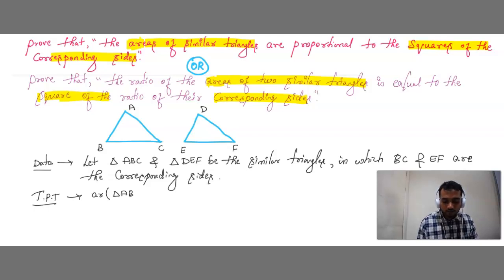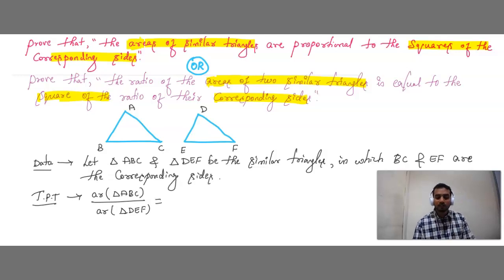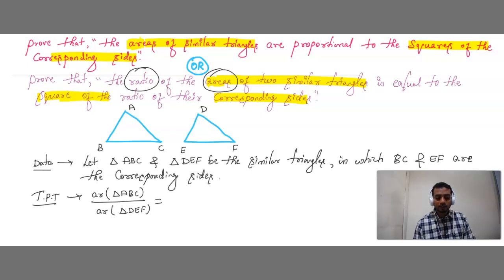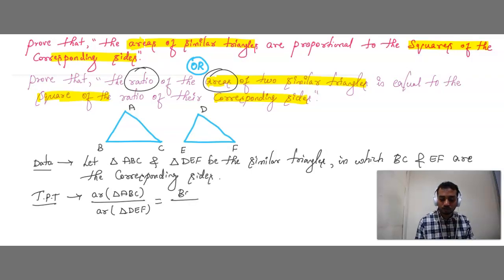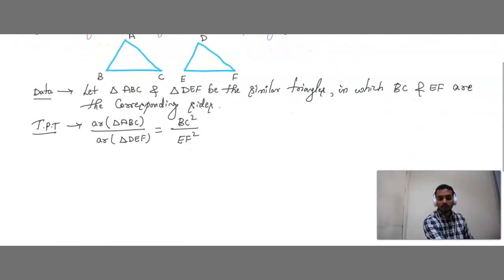Now, to prove: Area of Triangle ABC divided by Area of Triangle DEF is equal to the ratio of the squares of the corresponding sides. The corresponding sides we chose are BC and EF, so we need to prove that Area(ABC) / Area(DEF) = BC² / EF².